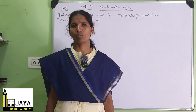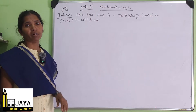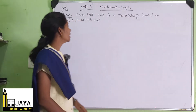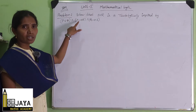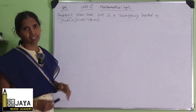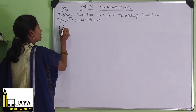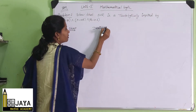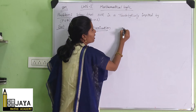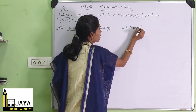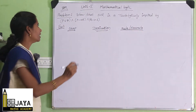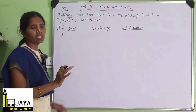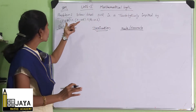Welcome to Jaya Maths. Today's topic is from discrete mathematics, mathematical logic: show that S∨R is tautologically implied by P∧Q, P implies R, and Q implies S. In the solution, we can see the derivation part — we need to write each step, the rule or formula being used. We are having three premises, and we have to show that using these three premises.